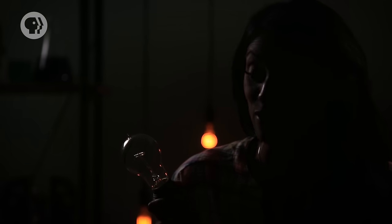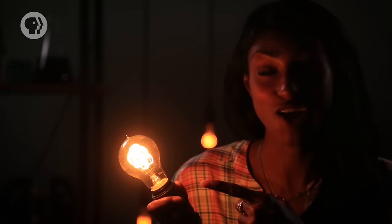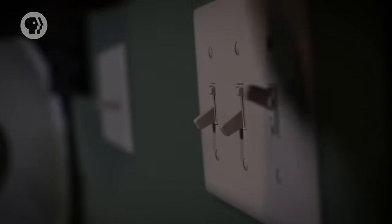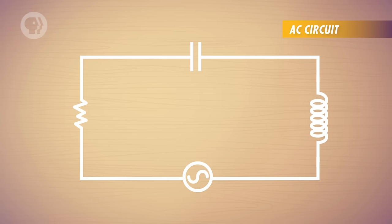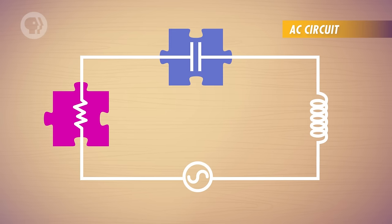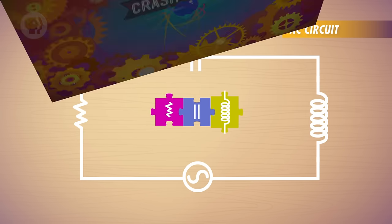We couldn't keep the lights on without alternating currents. We've talked about how they change voltage, which helps transmit electricity over long distances. But there's so much more to the physics of AC circuitry. For example, how are alternating currents affected when you add resistors, or capacitors, or an inductor? These three pieces of the electricity puzzle are used everywhere, and today we're going to put them together.